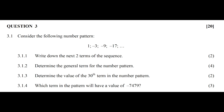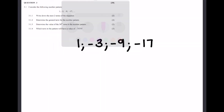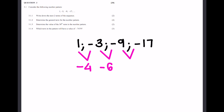Consider the following number pattern: 1, negative 3, negative 9, and negative 17. We need to write down the next two terms, determine the general term, find the 30th term, and determine which term has a value of negative 7,479. To find the next two terms, we start by finding the first differences: minus 3 minus 1 is minus 4, minus 9 minus minus 3 is negative 6, minus 17 minus minus 9 is negative 8. Then the second differences: minus 6 minus minus 4 is negative 2, and minus 8 minus minus 6 is also negative 2.